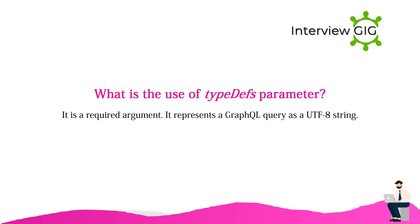What is the use of the type diffs parameter? It is a required argument. It represents a GraphQL query as a UTF-8 string.